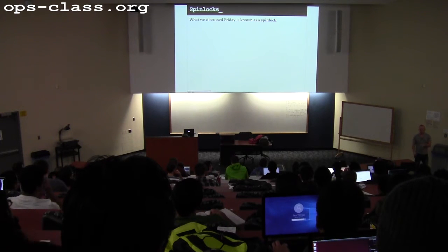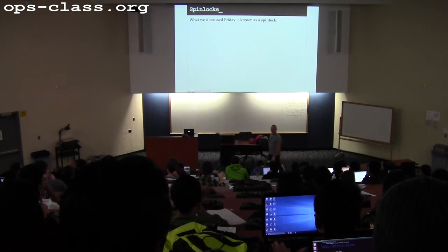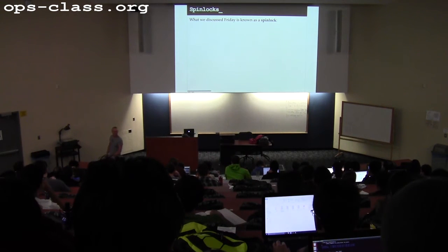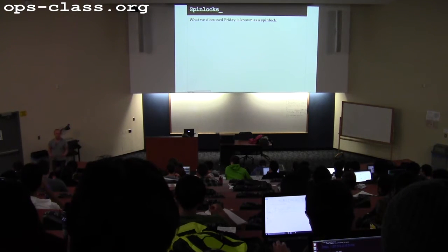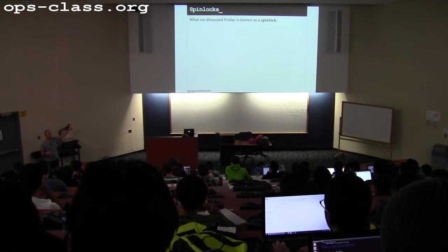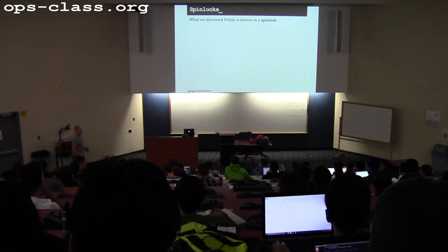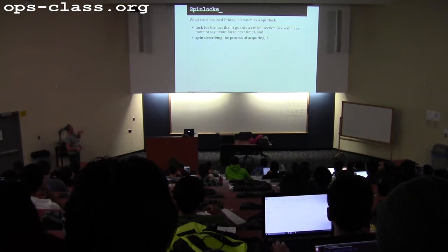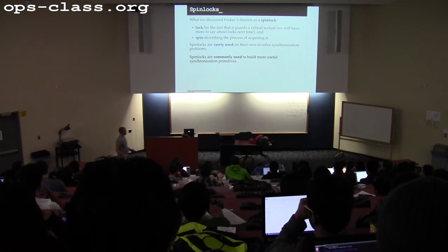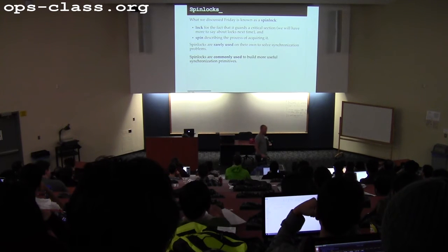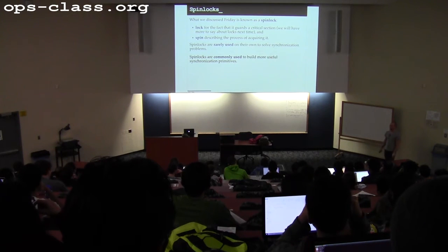The spin lock is what we discussed on Friday. It's a form of lock where, if you try to acquire a lock and it's busy, you wait by busy waiting — repeatedly checking something about the system to see if it's changed. Specifically, we talked about repeatedly hammering a memory location using a test-and-set or similar low-level hardware primitive. A spin lock describes the process of acquiring this lock type via busy waiting. Spin locks are not normally used on their own to acquire resources, but they're frequently used as a building block for creating more complex synchronization primitives.